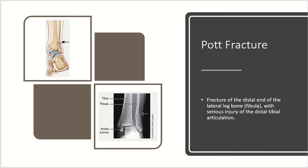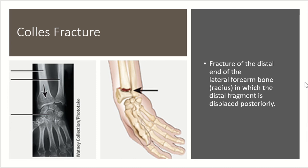Next we have a Pott fracture, which is a fracture of the distal end of the lateral bone of the leg — the fibula — also corresponding to serious injury to the distal tibia articulations, so this occurs in the ankle. And a similar kind of fracture occurring in the wrist is called a Colles' fracture, which is a fracture to the distal end of the lateral forearm bone — the radius — in which the distal fragments are displaced posteriorly.